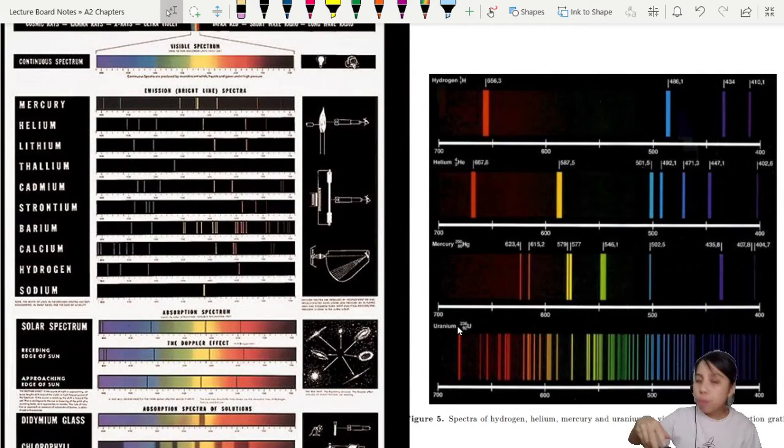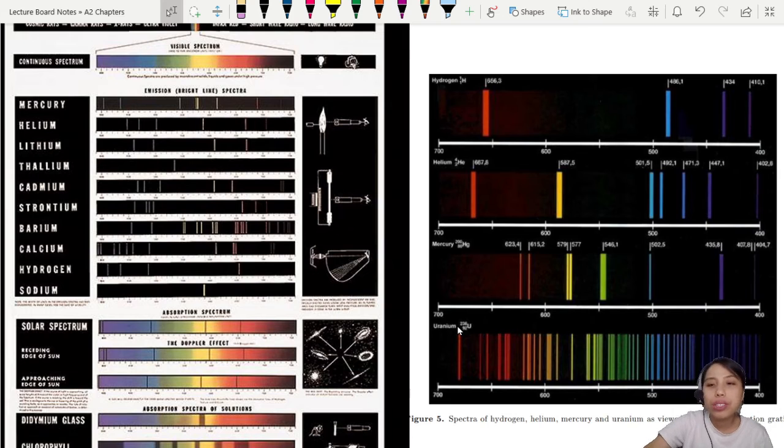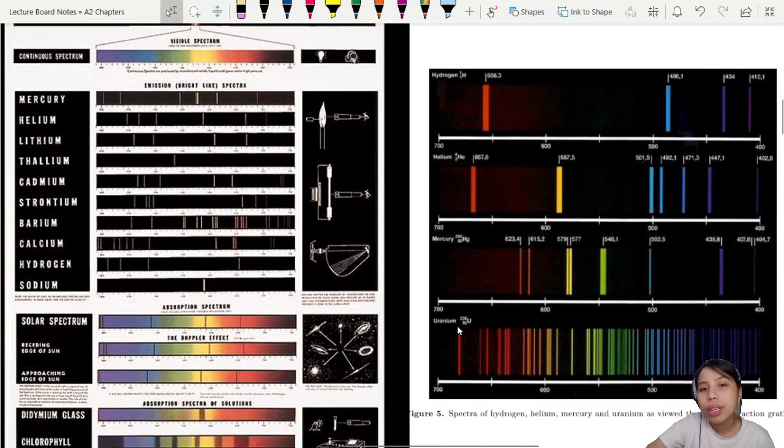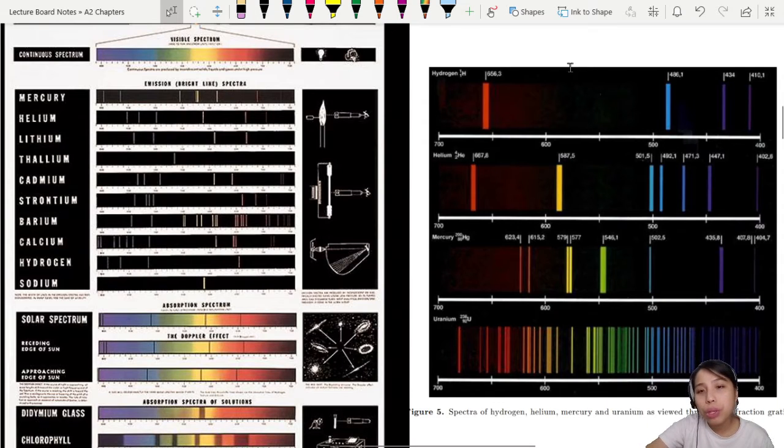So we use this idea of spectroscopy, it's kind of a method to study different elements and composition of different materials. I throw this inside some kind of machine, I see what color comes out, all the wavelength.